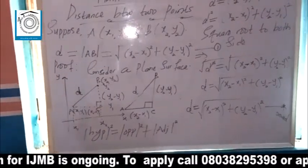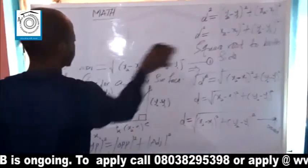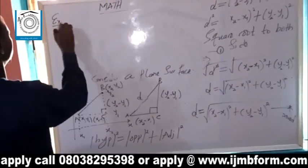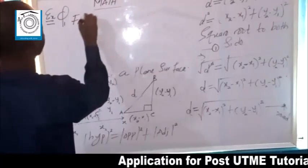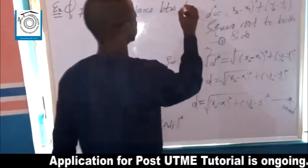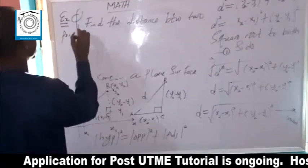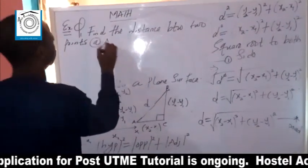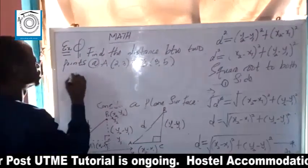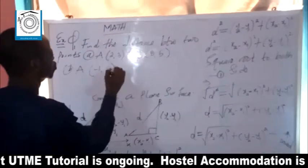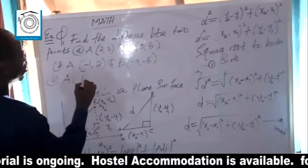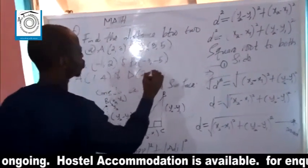Let's illustrate this with examples. Question one: find the distance between two points. Part A: point A is (2, 3) and point B is (3, 5). Part B: point A is (−1, 2) and point B is (−3, −5). Question C: point A is (1, 4) and point B is (2, 5).